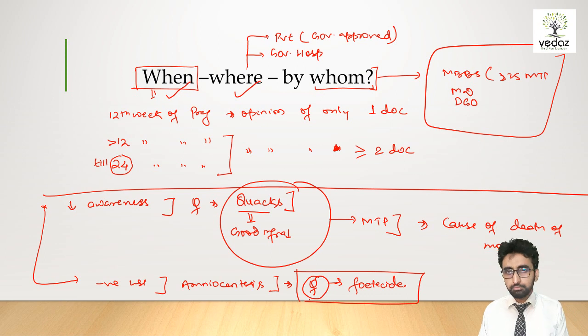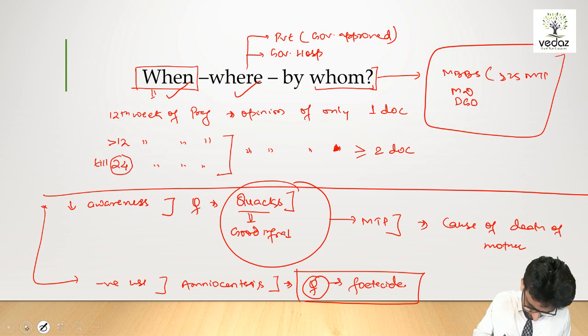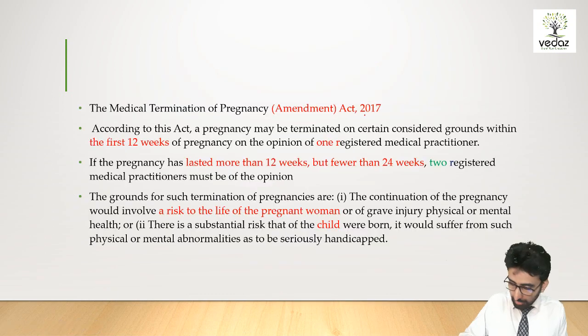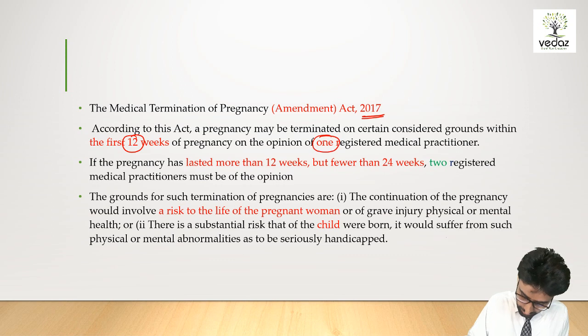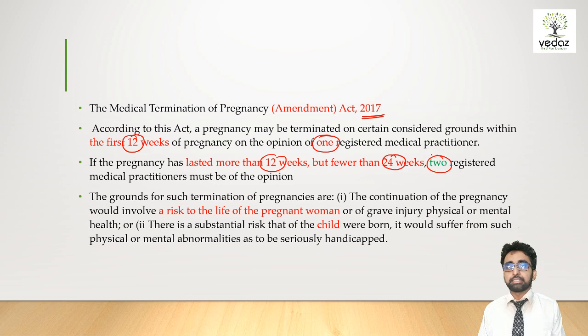People are worried about infrastructure and unqualified doctors. The amendment of 2017 says that up to 12 weeks only one doctor is needed, and from 12 to 24 weeks you need two RMP registered doctors' permission. The conditions we have already seen.